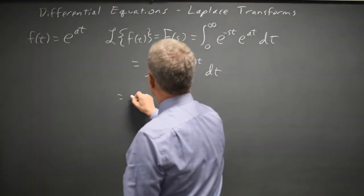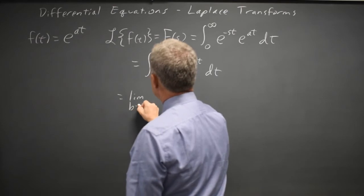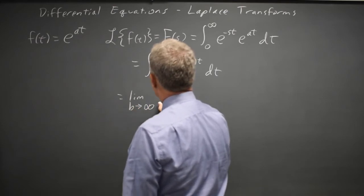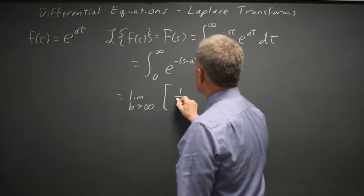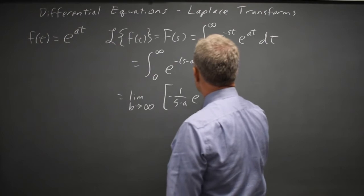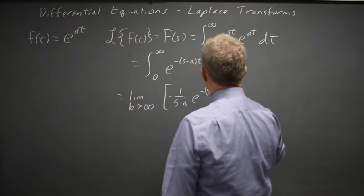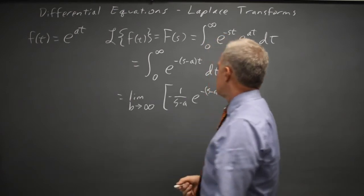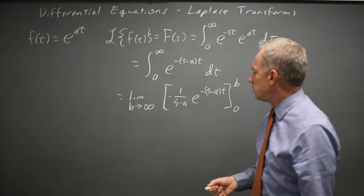And that integral is the limit as b goes to infinity of 1 over s minus a negative e to negative s minus a quantity times t from zero to b. Here I'm using the more formal definition of an improper integral.